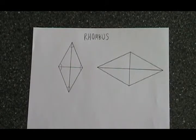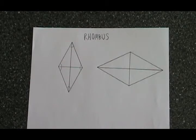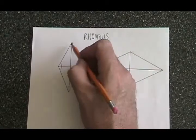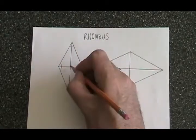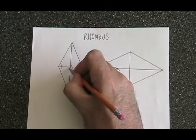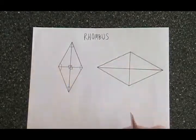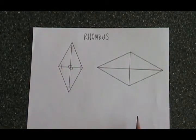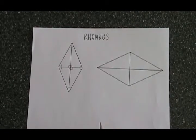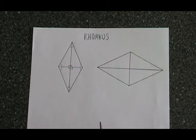A rhombus has four sides that are equal in length, which is the same as a square. But this is where the difference ends. A rhombus has two diagonals which, although they cross each other at right angles like the diagonals of a square, they are not equal in length like the diagonals of a square. The diagonals of a rhombus are not equal in length, and that is what makes a rhombus different from a square.